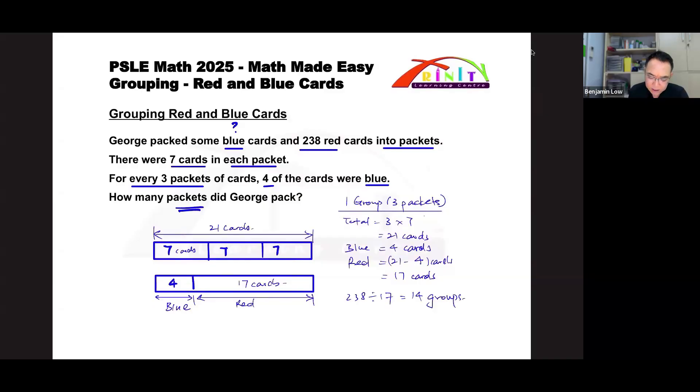The question is asking you how many packets did he pack, so is 14 the answer? It isn't, right? Because 14 is not the number of packets, it's the number of groups. Since one group has got 3 packets, what should you do next? You should take 14 times 3 to get 42 packets.